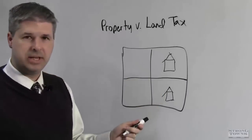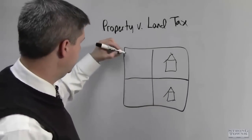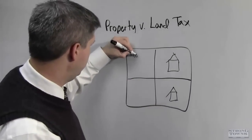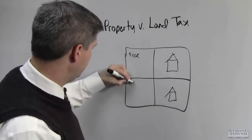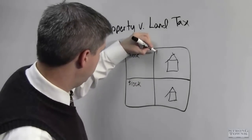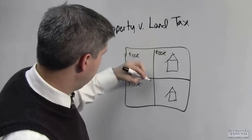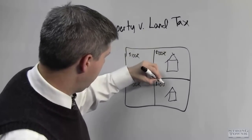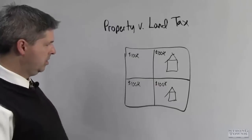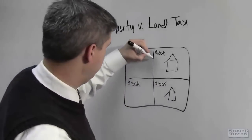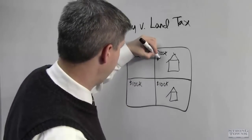The assessor goes out and looks at these and says for each property the land is worth, let's say $100,000. So each of these the land is worth $100,000. And these properties here are worth, let me see, the buildings are worth $300,000.